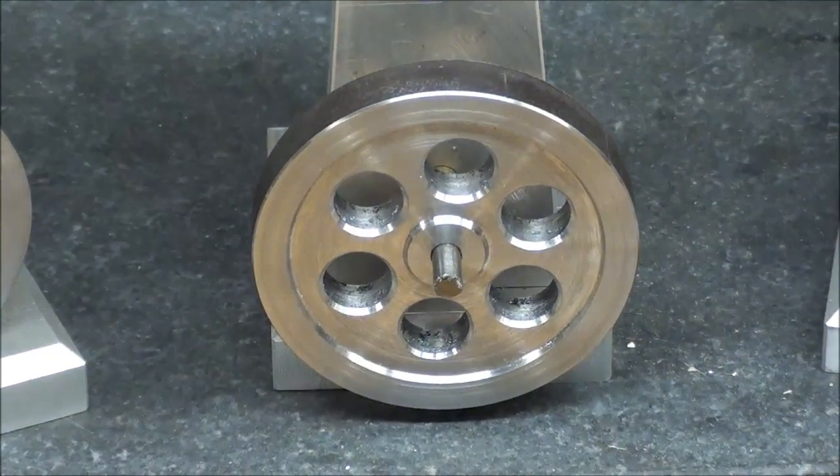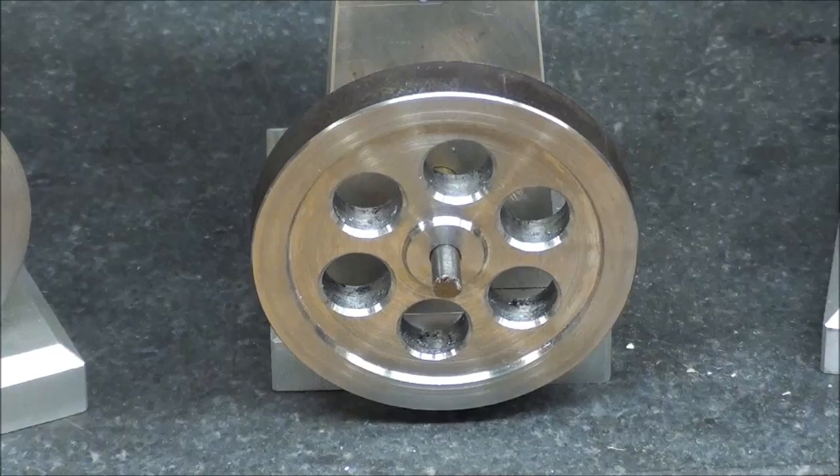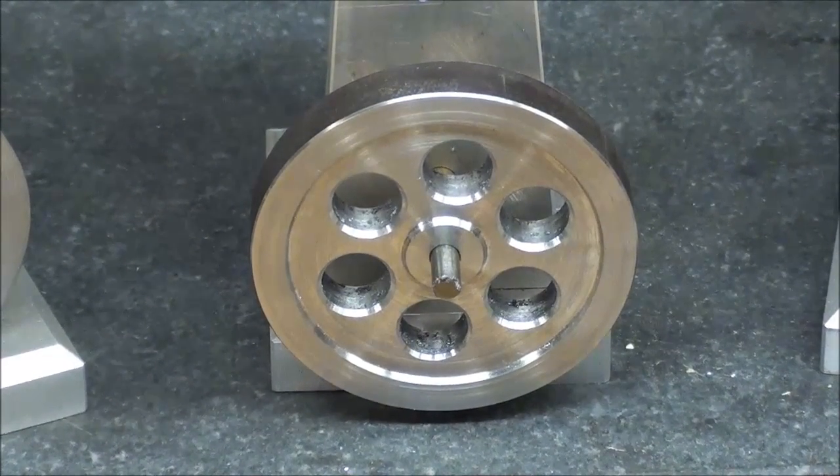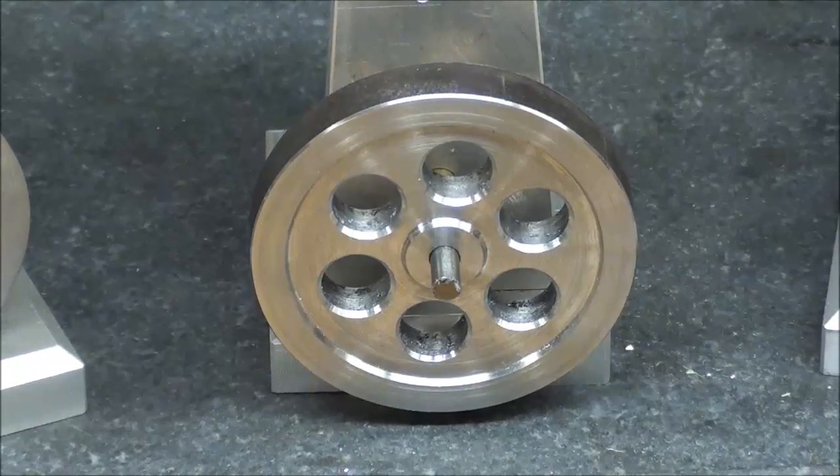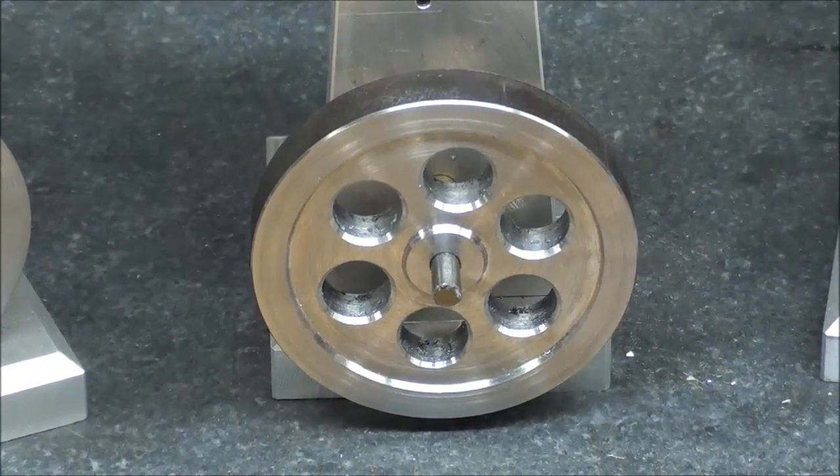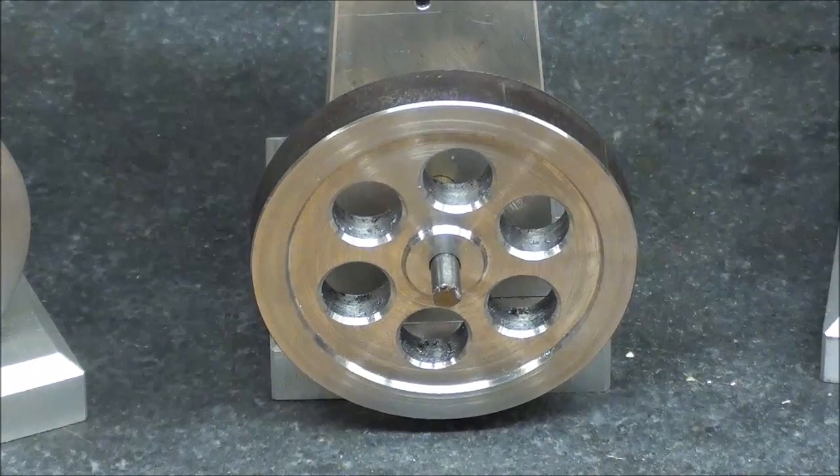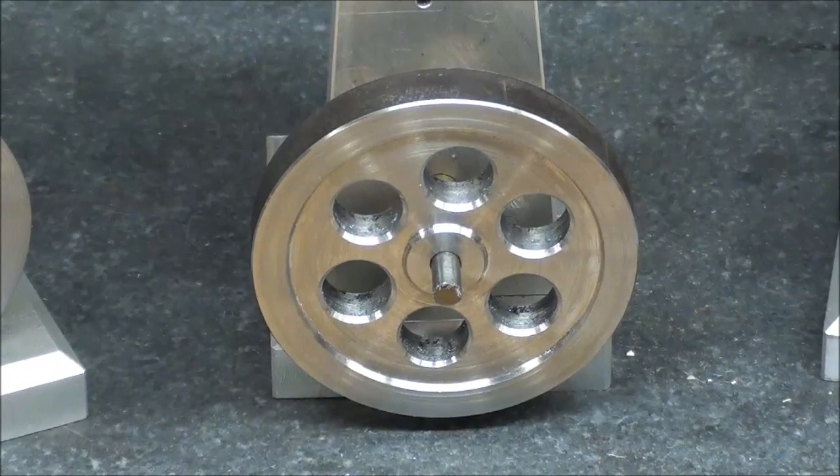And that's how you do a bolt circle on the milling machine using the digital readout. Be sure and watch the three other upcoming videos with variations on this theme. Also bolt circles and how to do it by different methods. This is Tubal Cain saying so long for now.